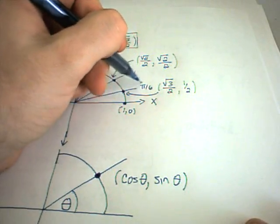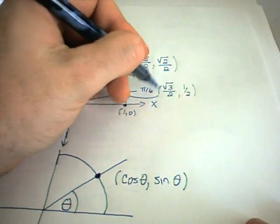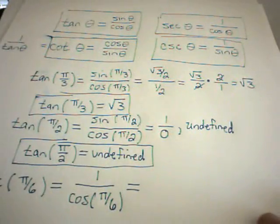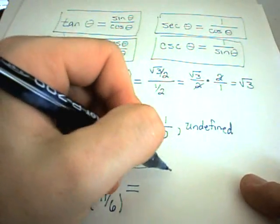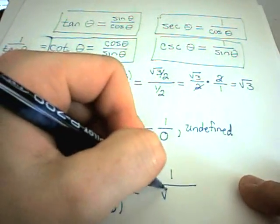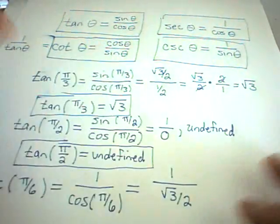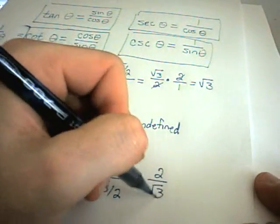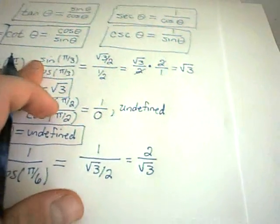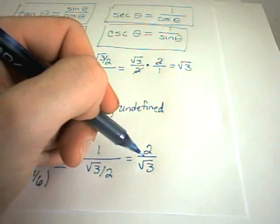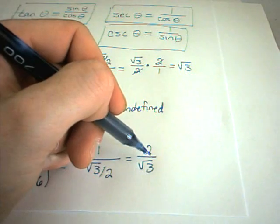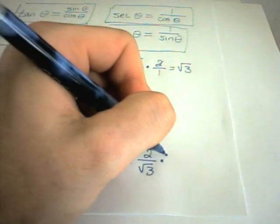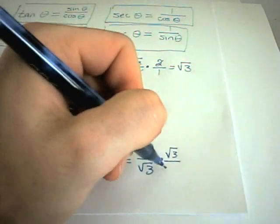So again, I find the angle pi over 6. The x-coordinate that goes with pi over 6 is square root of 3 over 2. So it says secant of pi over 6 is going to be equivalent to 1 over square root of 3 divided by 2, which is equivalent to 2 over square root of 3. And sometimes you'll see that people don't like to have radicals in the bottom of a fraction. So we can fix that.